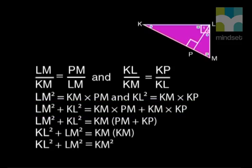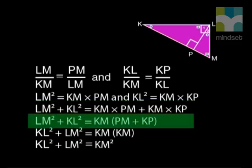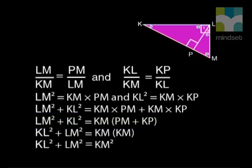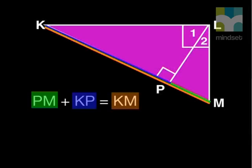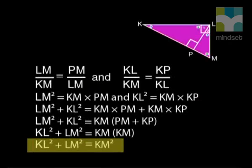Taking a common factor of KM, we are left with PM plus KP in the bracket. Look at the diagram again. PM plus KP is the same as KM. So, we have arrived at the theorem. KL squared plus LM squared equals KM squared.